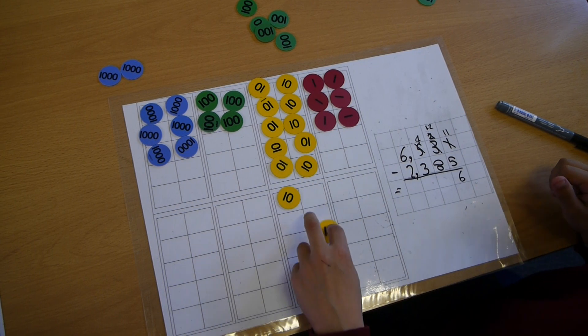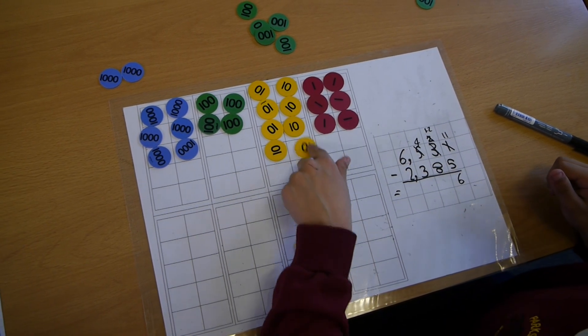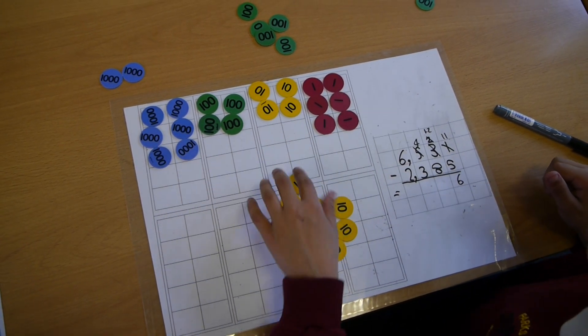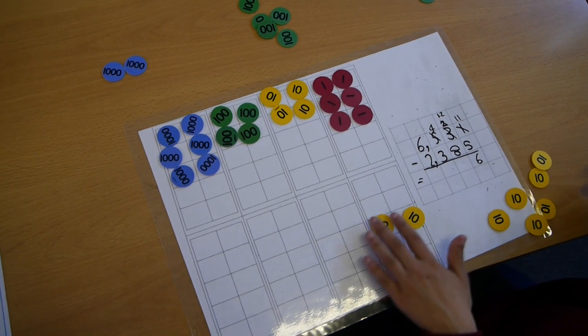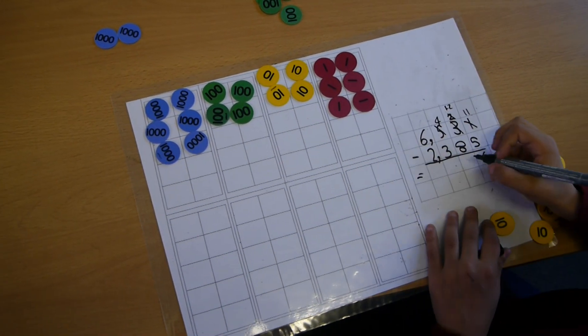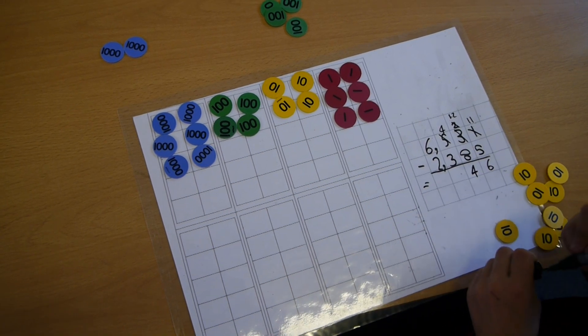Now we can do 120 take away 80. 10, 20, 30, 40, 50, 60, 70, 80. And our answer in the tens column would be 40. So we've got 46 now.